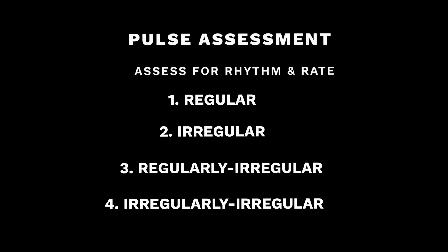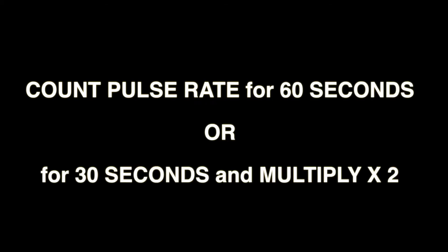When we assess a pulse, we want to assess for the rhythm and the rate. Pulses can be described as regular, irregular, regularly irregular, or irregularly irregular. Normally you want to count for one minute, though you can count for 30 seconds and multiply by two.